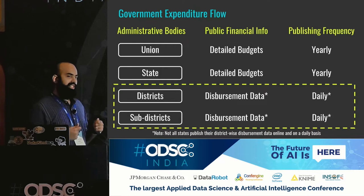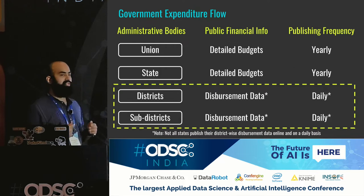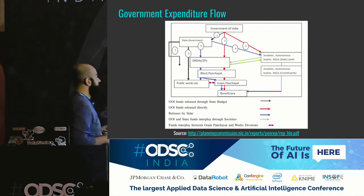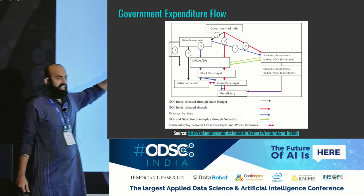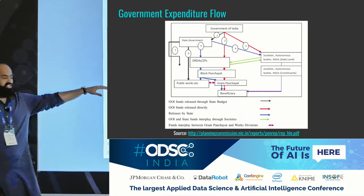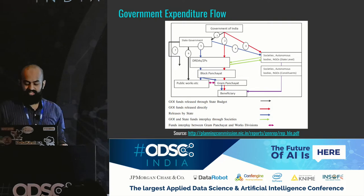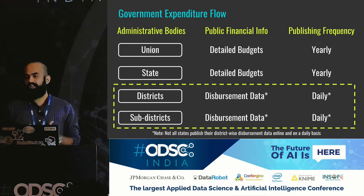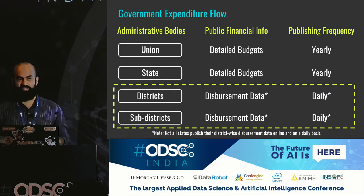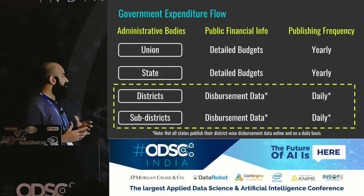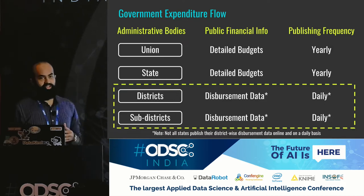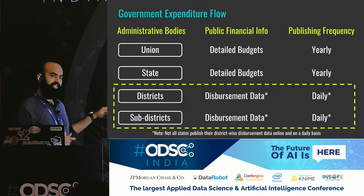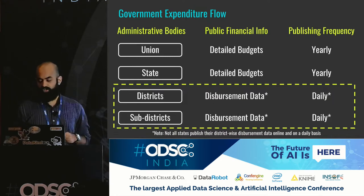Interestingly, some states publish disbursement information — how much money is being disbursed from district treasuries to block panchayats and other beneficiaries. This is near real-time expenditure of district treasuries, and this information is being published by a couple of states on a daily basis. So that will be the focus area of our talk today: district and sub-district treasury data.